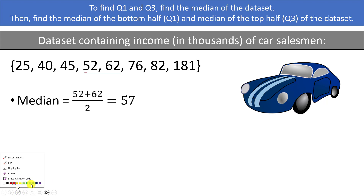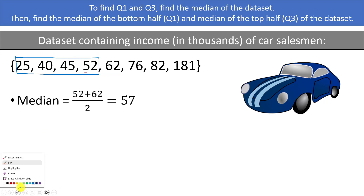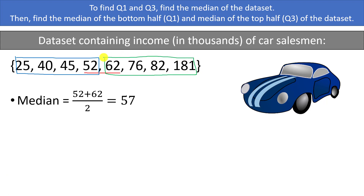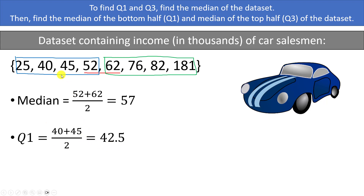Once we've found the median, we have a bottom half and top half of our data set. The bottom half contains 25, 40, 45, and 52; the top half contains 62, 76, 82, and 181. To find Q1, we take the median of the bottom half: with four numbers, it's the mean between 40 and 45, giving us Q1 = 42.5. Q3 is the median of the top half — the mean between 76 and 82 — giving us Q3 = 79.